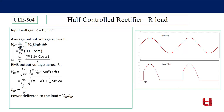To find the RMS output voltage — taking root, then mean (1/2π), then square — the integral from alpha to π of Vm²·sin²(θ)·dθ gives: V0_rms = (Vm / 2√π) · √(π − α + sin(2α)/2). The RMS output current is equal to the RMS output voltage divided by resistance R.